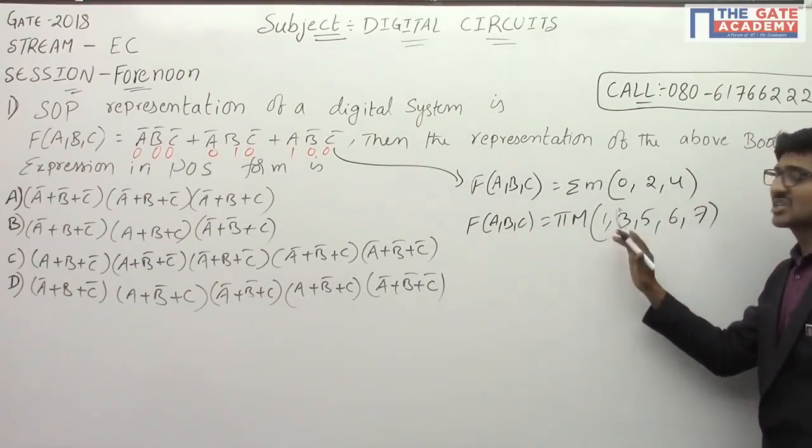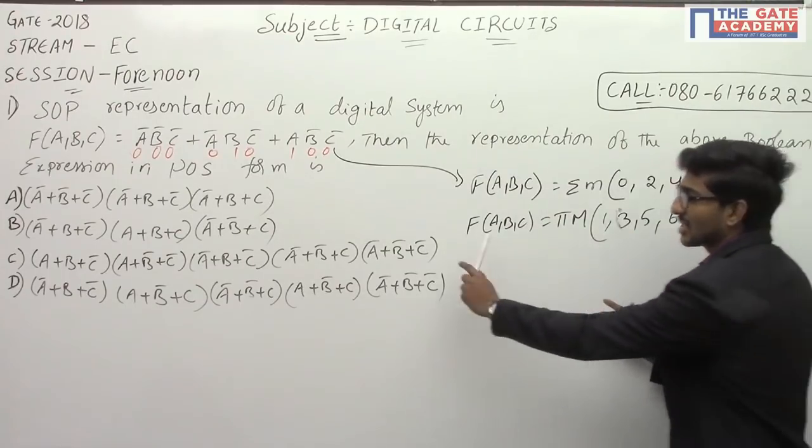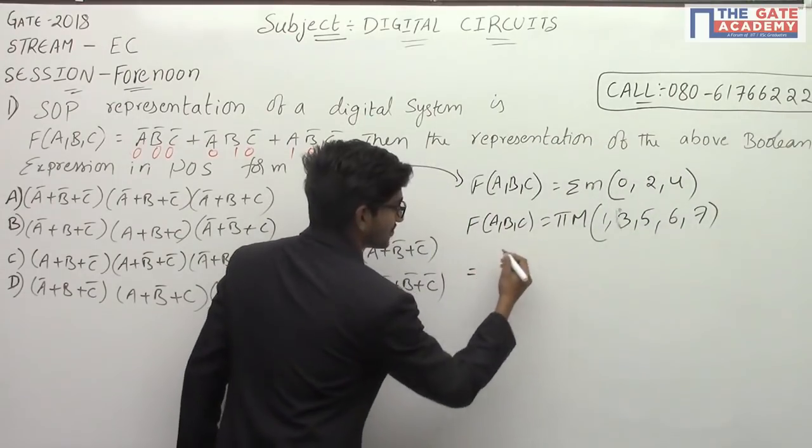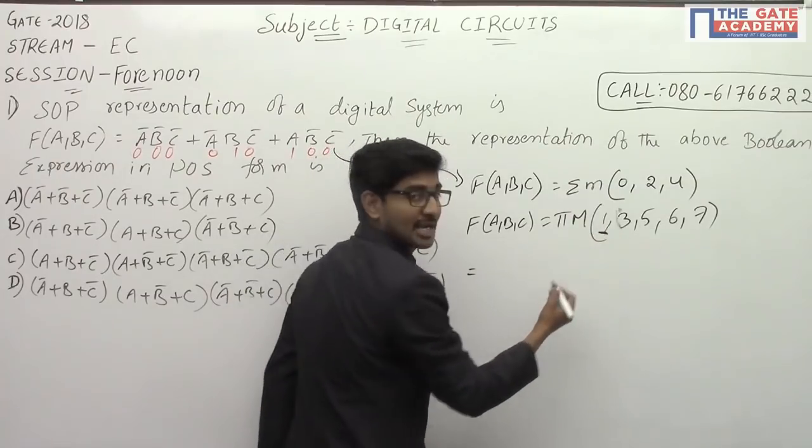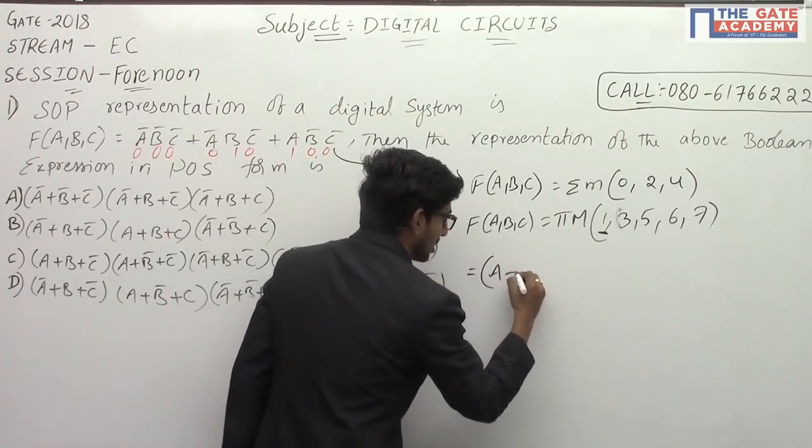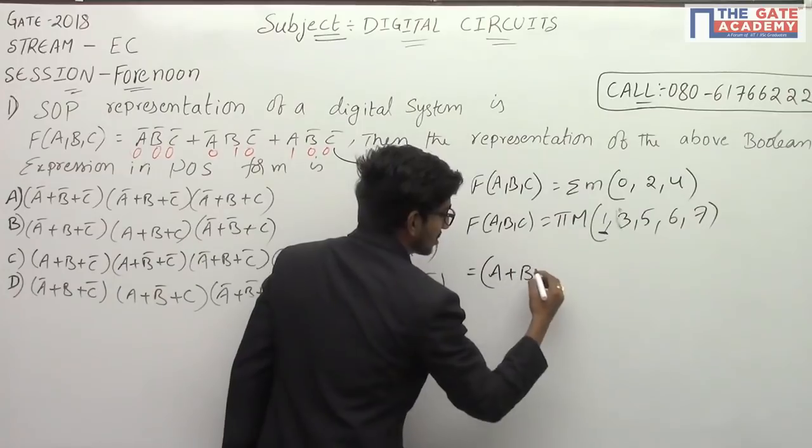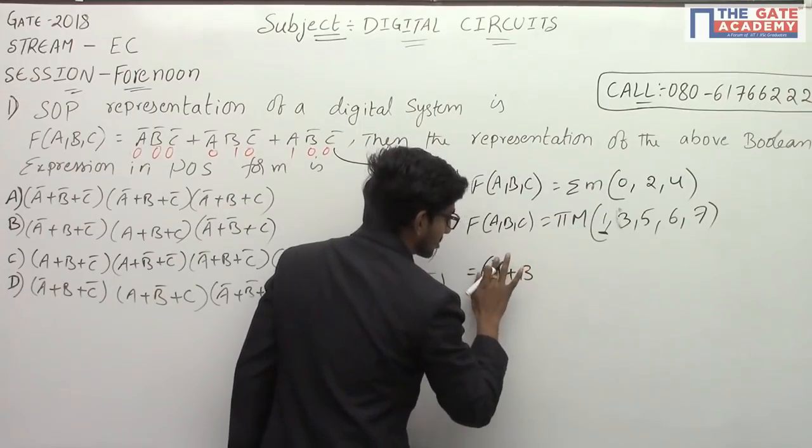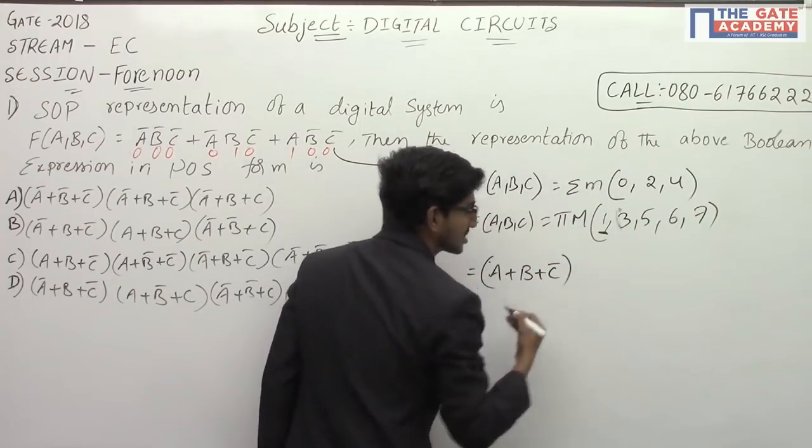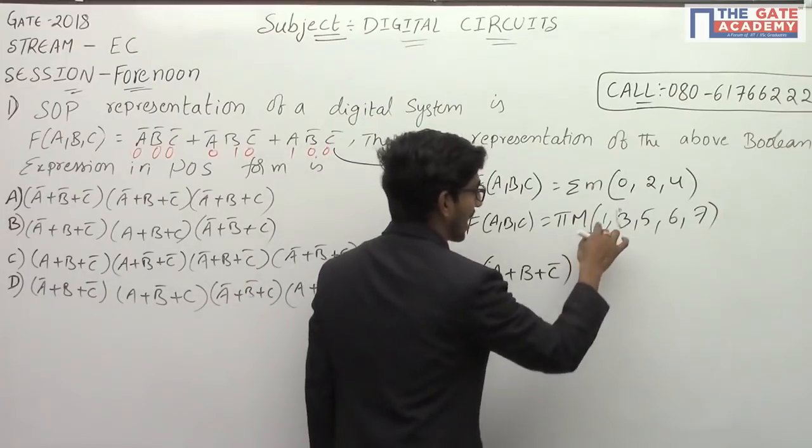Now, no need to simplify anything using K-map. Directly write the expressions. How you will write this in maxterms? For term 1: A + B + C̅, this is the maxterm.